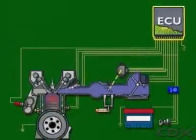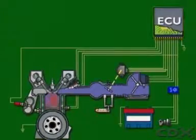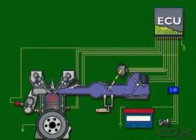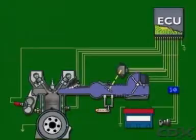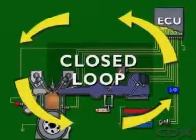A control unit can use data from its memory to adjust engine settings over time. This is called adaptive learning, and it only occurs with feedback or closed-loop operation.